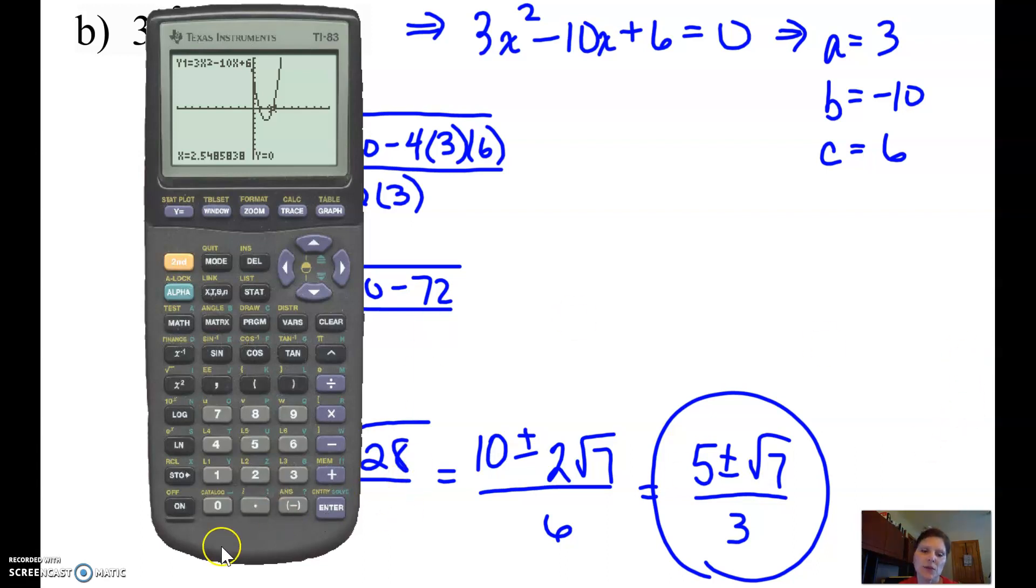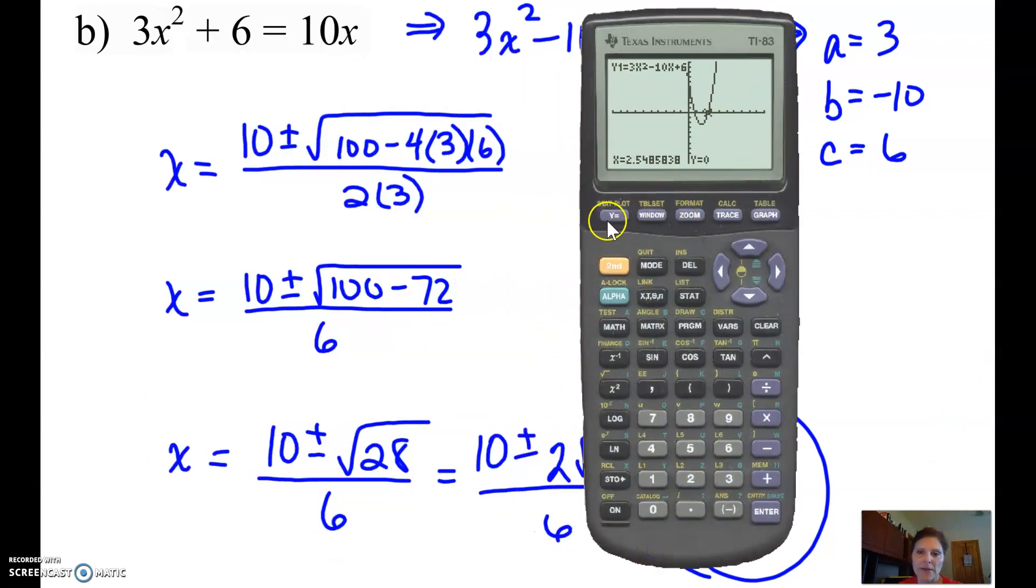Could you have done this with your calculator from the beginning? Yes, you can. You can solve any equation using your calculator, using the intersect feature. What I would do for that one is, I'm going to start out with the left-hand side, 3x squared plus 6, and then I'm going to graph separately, y2, as my right-hand side of the equation, and I'm going to hit graph.